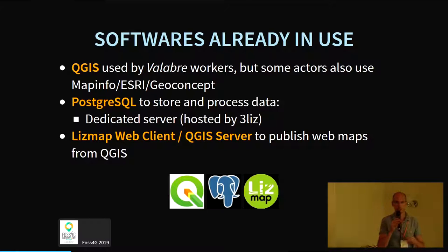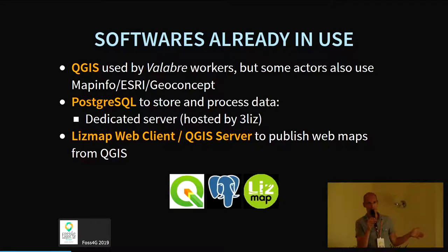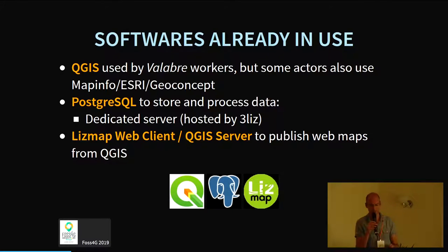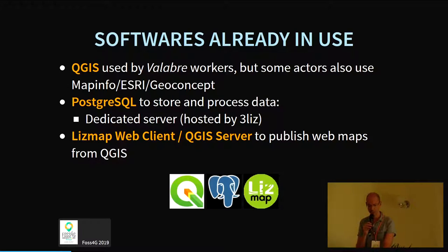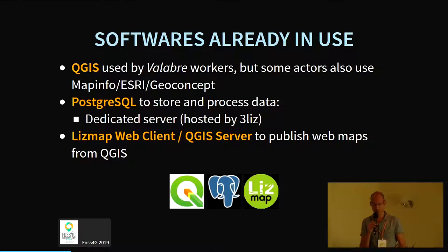They have already been using software for some time. QGIS is the main GIS used in Valabre, though some actors also use different GIS solutions like MapInfo, S3, or GeoConcept, which is a very old French GIS. They use PostgreSQL to store and process data on a hosted server. They also use the Lizmap web client application, which is made to publish web maps from QGIS. I will focus this presentation on this triptych: QGIS, PostgreSQL, and web publication with Lizmap.